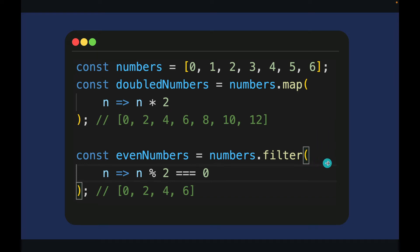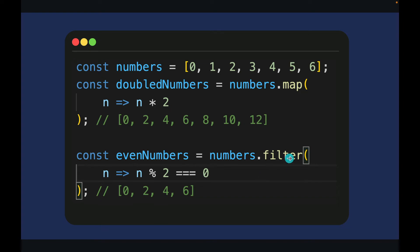You can use the filter function to filter an array. For example, if I want only even numbers from the numbers array I can loop through each item and keep only those which are even numbers, creating an even numbers array using the filter function.